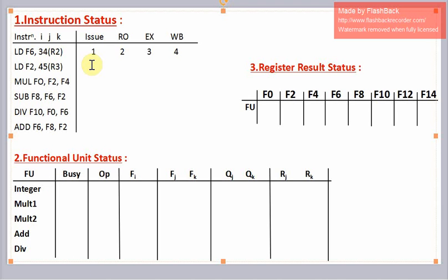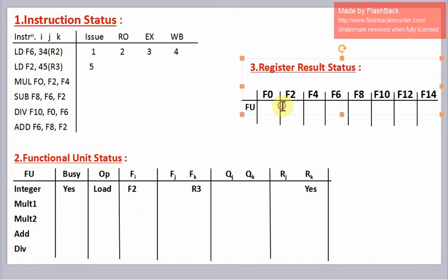In the fifth clock cycle, we can issue the second load instruction. So the integer unit will become busy. The operation is load. Destination register is f2, source register is r3. Since r3 is present, the flag indicating fk will be yes. Now this integer unit is going to write f2, so we represent it in the register result status.